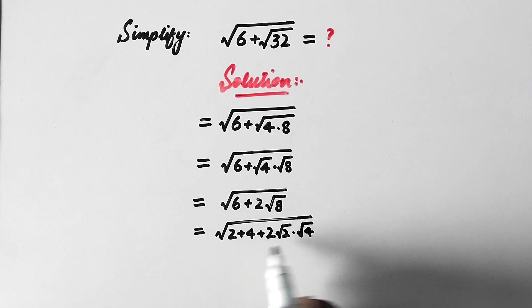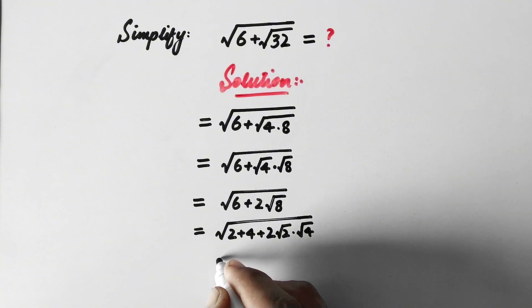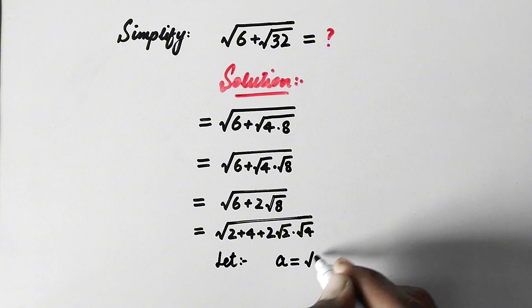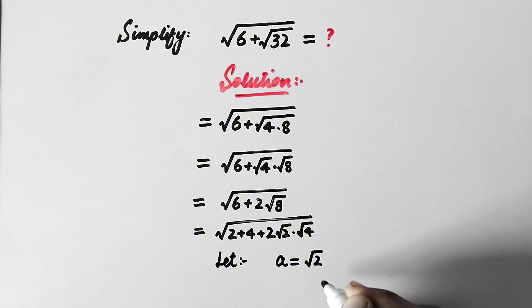And now here what we will do next is we will let a = √2. So in this way a² = 2.